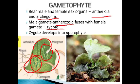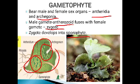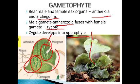The zygote develops into the multicellular sporophytic generation, which is the dominant phase in pteridophytes. To summarize the life cycle: the sporophyte develops true stem, root, and leaf; sporophylls bear sporangia where spores form; spores fall and develop into the prothallus; the prothallus bears male and female sex organs; gametes fuse to form the zygote; and the zygote develops into the sporophyte.